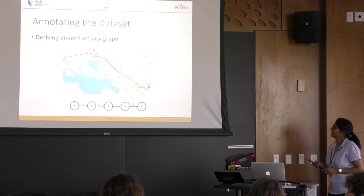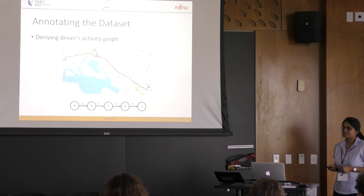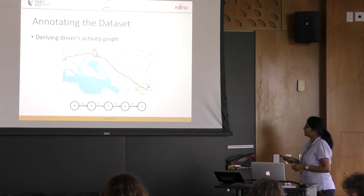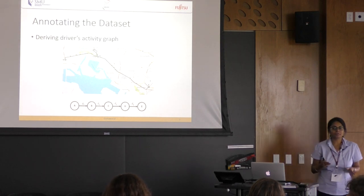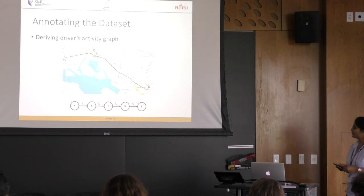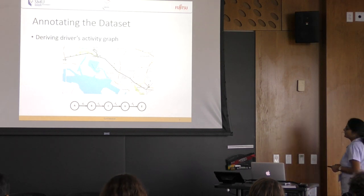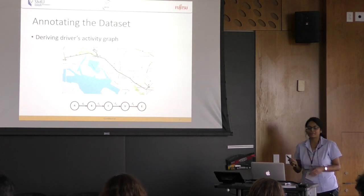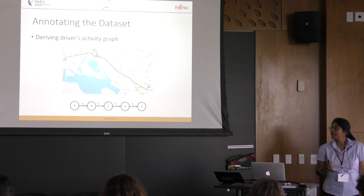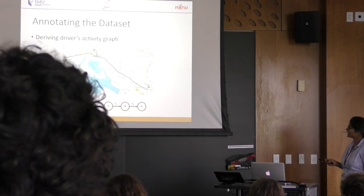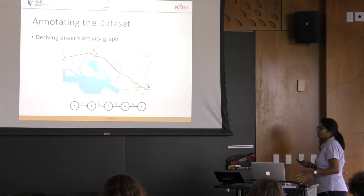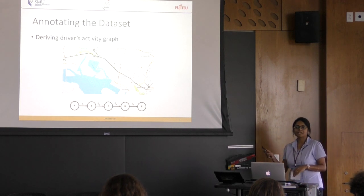We convert this information into an activity graph of the driver. The activity graph is a directed graph where the nodes represent decision points and the weight of the edges represents the distance traveled between points. Additionally, the last terminal node contains information about the trip if the trajectory ended with getting a trip.